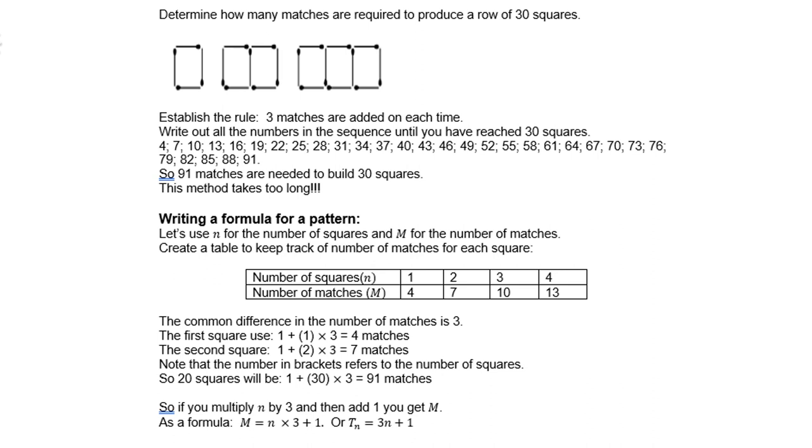So what you do is write down a formula for the pattern. Let's use n for the number of squares and m for the number of matches. Then we create a table. Pattern 1 has 4 matches. Pattern 2 has 7 matches. Pattern 3 has 10. Pattern 4 has 13, and so on.